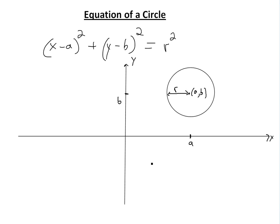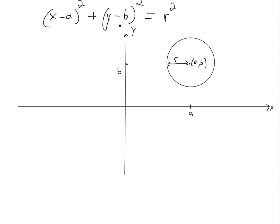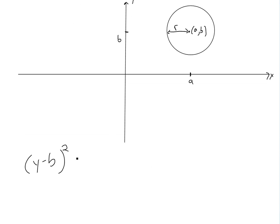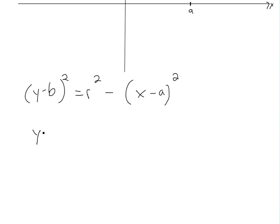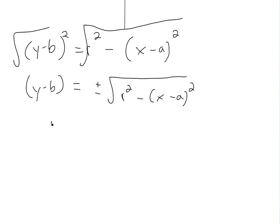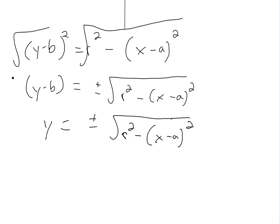To prove that, let's just rearrange this equation. If we rearrange it for y, we write y minus b all squared equals r squared minus x minus a squared. Then if we square root everything, we get y minus b equals plus or minus the square root of r squared minus x minus a squared. Moving b over gives y equals plus or minus square root of r squared minus x minus a squared, plus b.